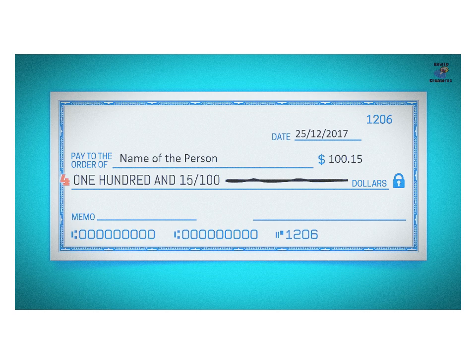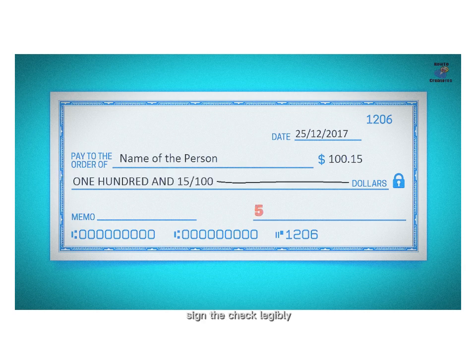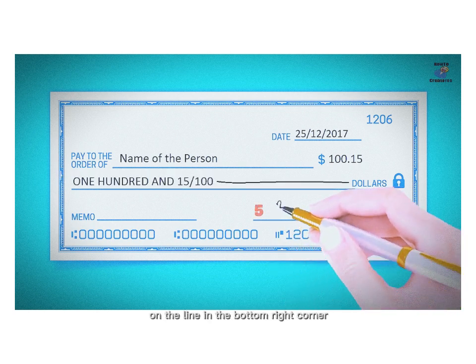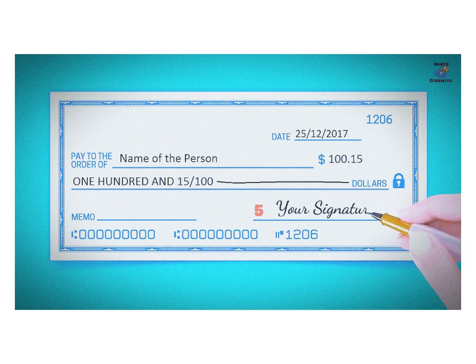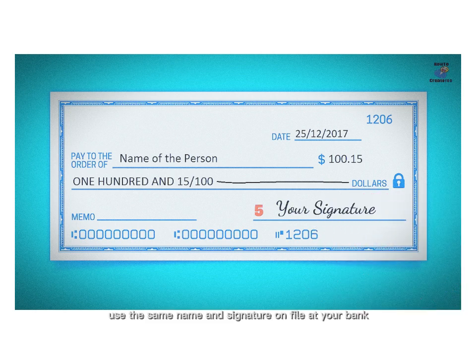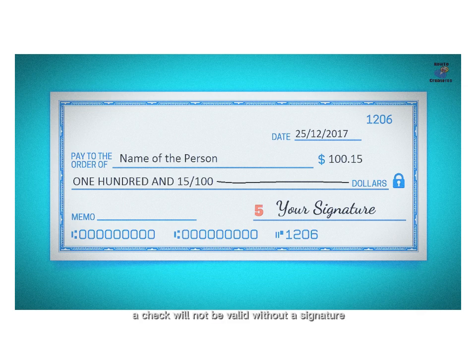Number 5: Signature. Sign the check legibly on the line in the bottom right corner. Use the same name and signature on file at your bank. This step is essential — a check will not be valid without a signature.